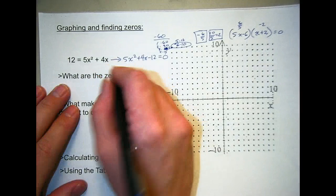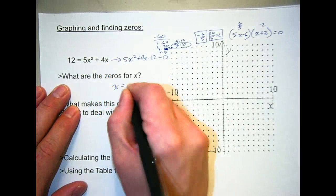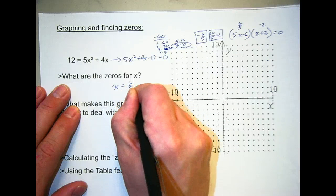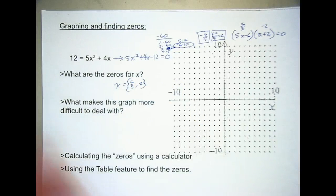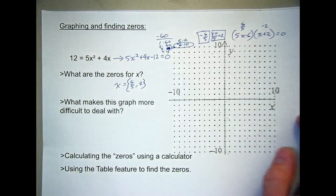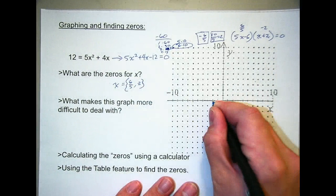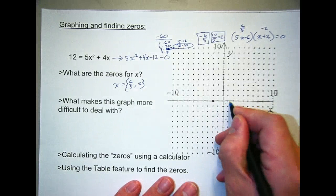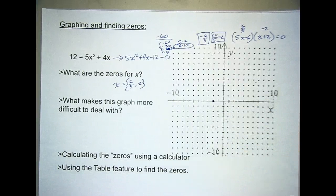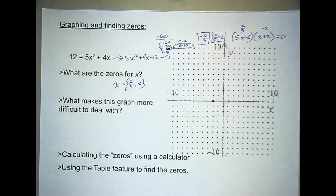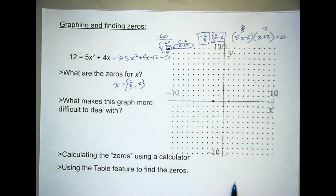So what are zeros? We've got x equals 6 fifths and negative 2. What makes this graph more difficult to deal with? Well, you have 6 fifths. It's like, okay, that's like right there-ish. That's a little tougher.